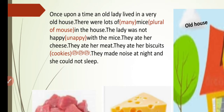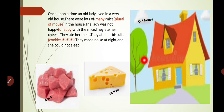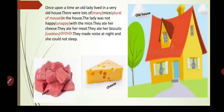'They ate her biscuits' — biscuits are also called cookies. 'They made noise at night' — the mice made a lot of noise at night. 'And she could not sleep' — she could not sleep properly. This picture shows the old house where the lady used to live. The lady was unhappy due to the mice because they ate everything — her cheese, meat, and biscuits — and made noise at night, so she was unable to sleep well.